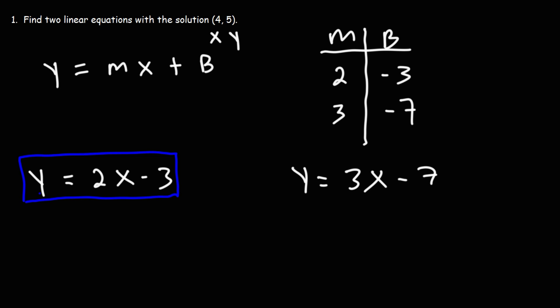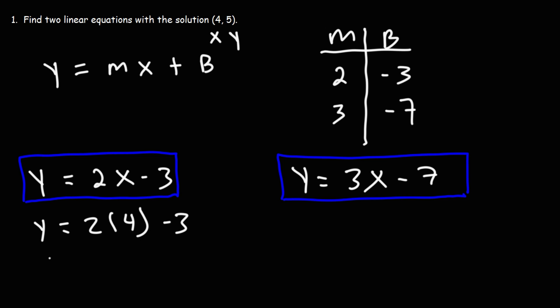Therefore, here are two linear equations with the solution (4, 5). We can check: if I plug in 4 for x, I should get 5 for y. 2 times 4 is 8, and 8 minus 3 is 5 — so that works.